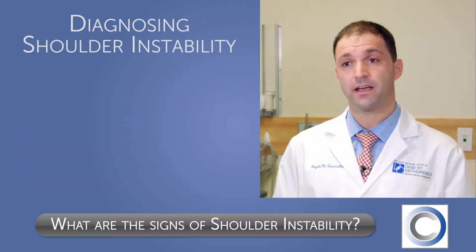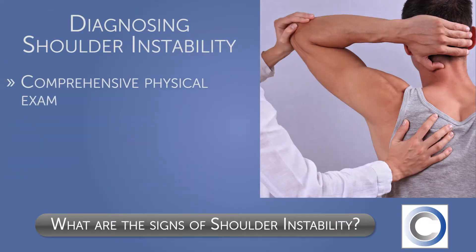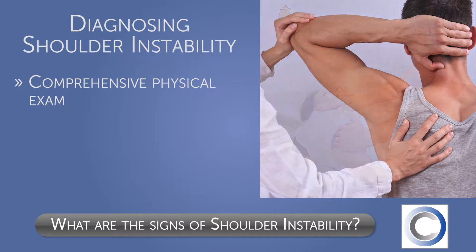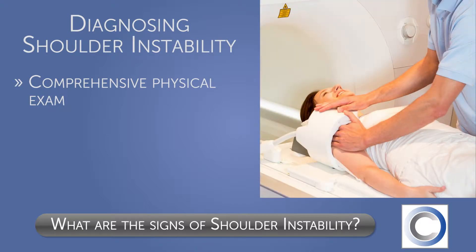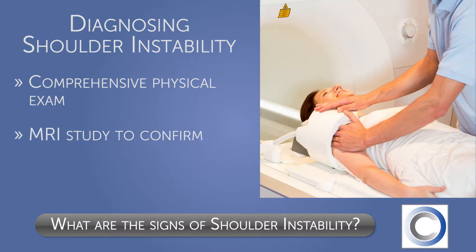Shoulder instability is typically diagnosed with a comprehensive physical examination in the office, and if we suspect that there may be a labral tear, we will order an MRI study of the shoulder.